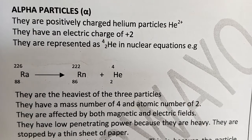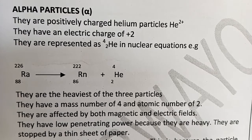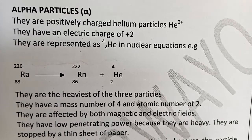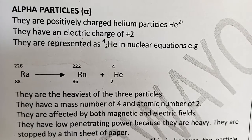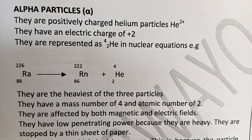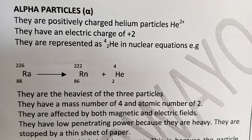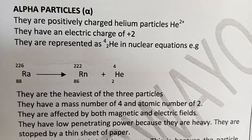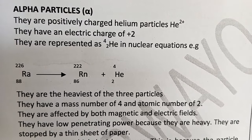Another property of alpha particles is that they are the heaviest of the three particles, with a mass number of four and atomic number of two. They are affected by both magnetic and electric fields. They have low penetrating power and are stopped by a thin sheet of paper.